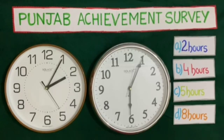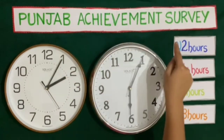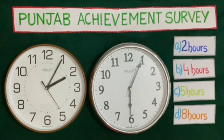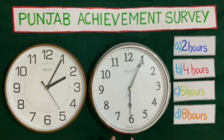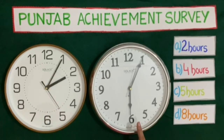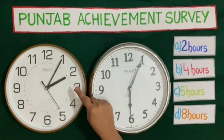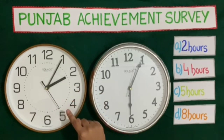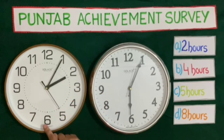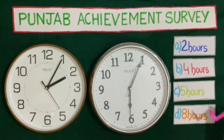Now we will solve a question from the Punjab Achievement Survey — that is the pass test. Here 2 clocks are given showing different times, and we will see how many hours difference there is between them. The time shown on the first clock is 2:05 and on the second clock is 6:05. Counting the difference: 1, 2, 3 and 4. So the correct answer is B, that is 4 hours.